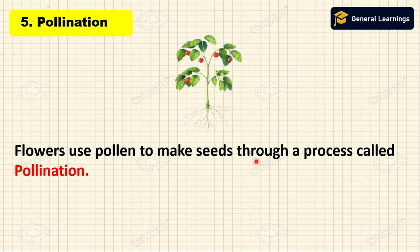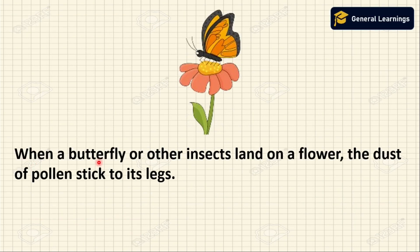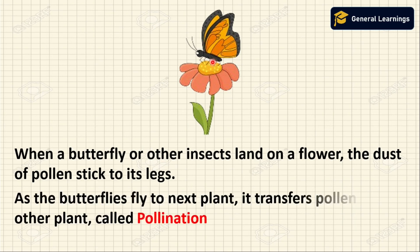Next is pollination. Flowers use pollen to make seeds through a process called pollination. Pollen is transferred by pollinators such as butterflies, birds, and bees, or even wind. When a butterfly or other insect lands on a flower, the dust of the pollen sticks to its legs. As the butterfly flies to the next plant, it transfers pollen to the other plant — this is called pollination.